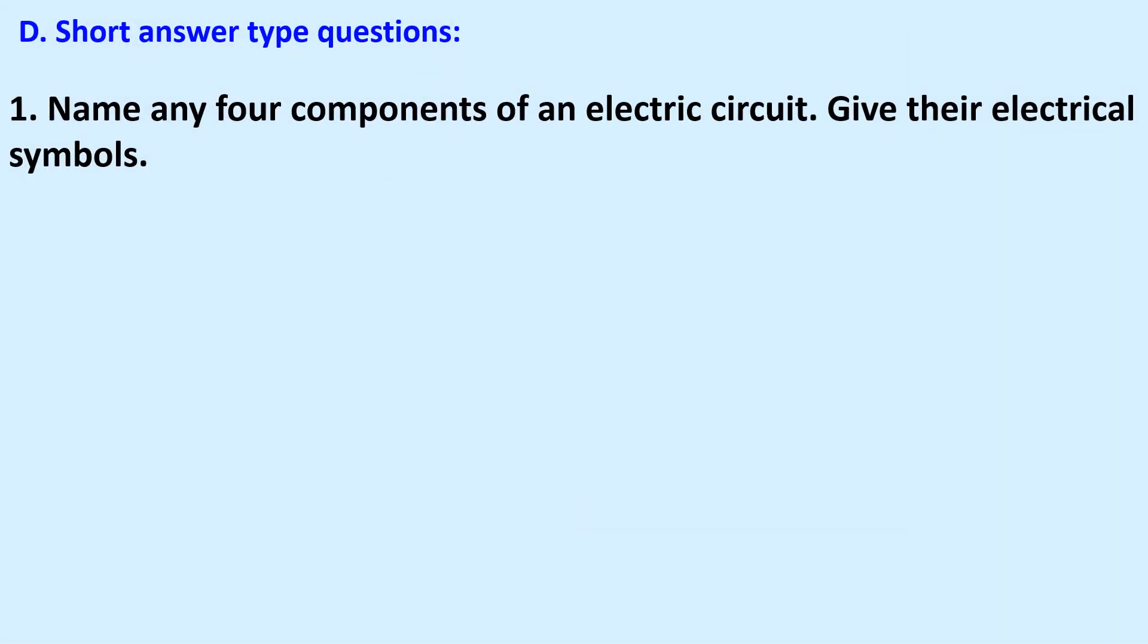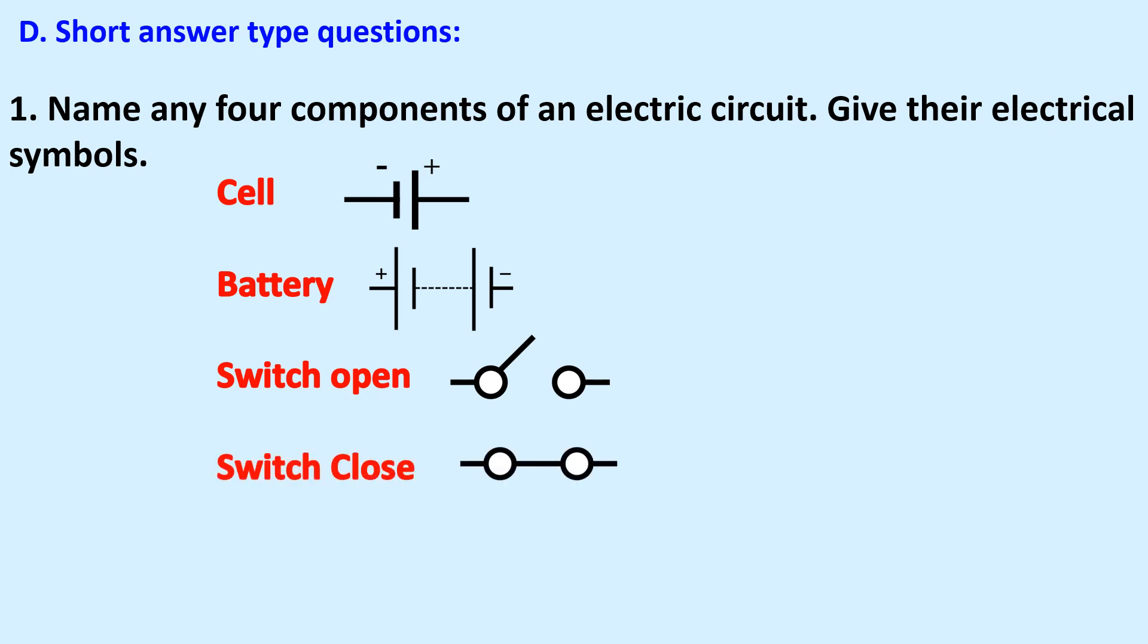Short answer type questions. Name any four components of an electric circuit. Give their electrical symbols. Cell, battery, switch open, switch closed, bulb.